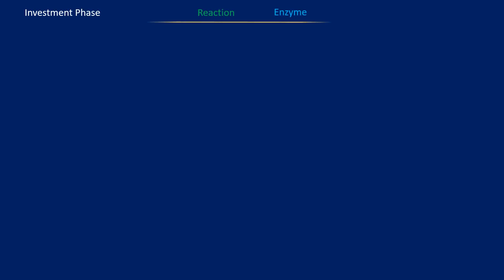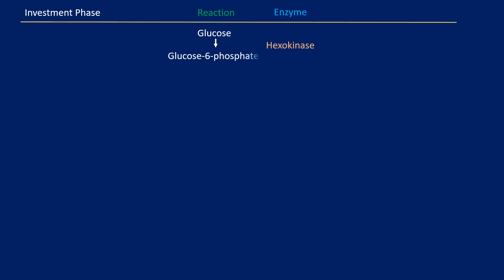Glycolysis begins with the enzyme hexokinase phosphorylating glucose into glucose-6-phosphate. This is the first transfer of a phosphate group requiring energy, and the first ATP molecule is used. This is an irreversible step. Subsequently, the enzyme phosphoglucose isomerase isomerizes glucose-6-phosphate into fructose-6-phosphate.